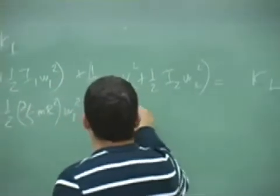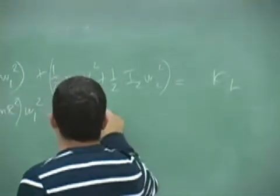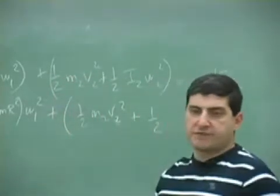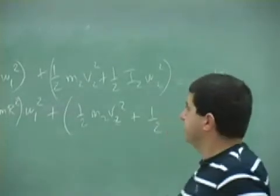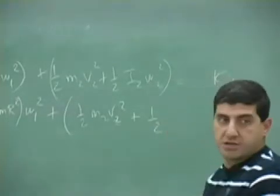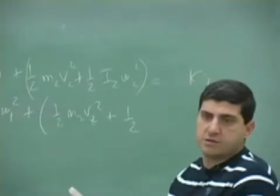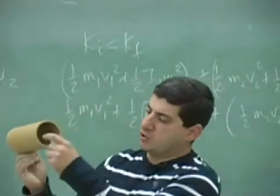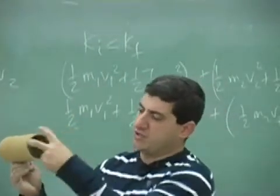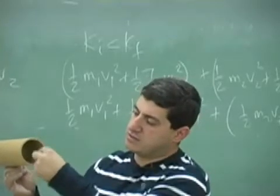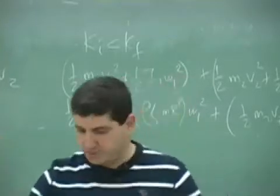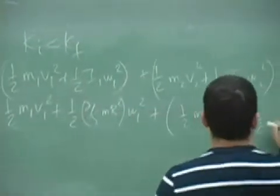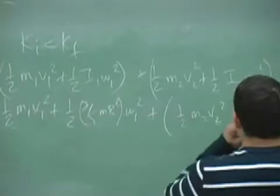And then this one is the half m2 v2 squared plus half. Then what's the moment of inertia of the hollow cylinder? That one is hollow cylinder mR squared, right? This one is almost hollow cylinder, not perfectly, but it's almost hollow, so all its mass is concentrated on the outside. So its mass distribution is just mR squared. So you're going to have mR squared here, omega 2 squared.